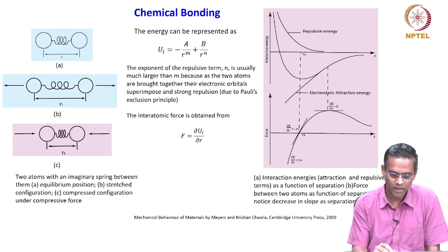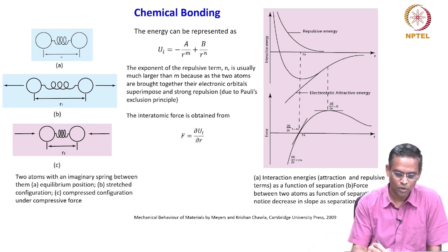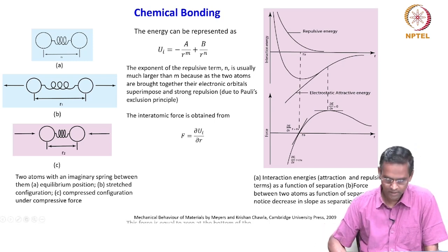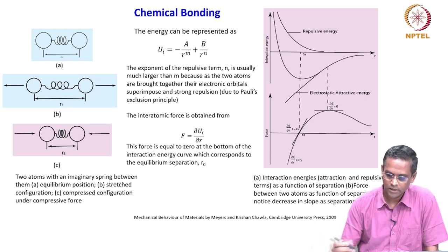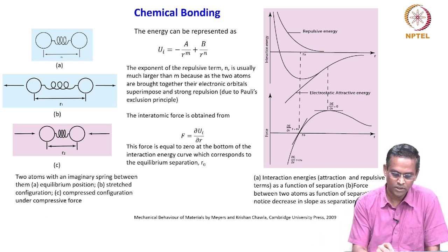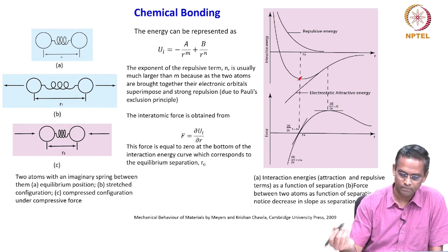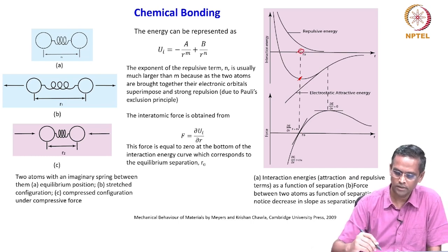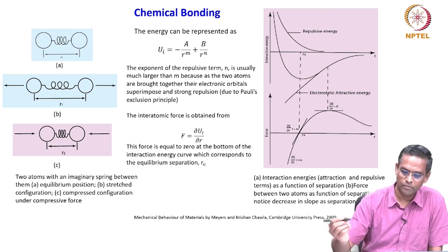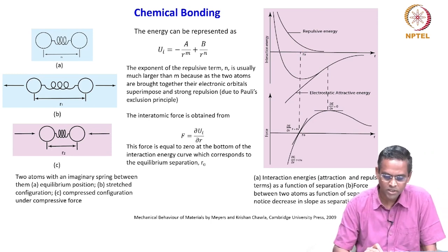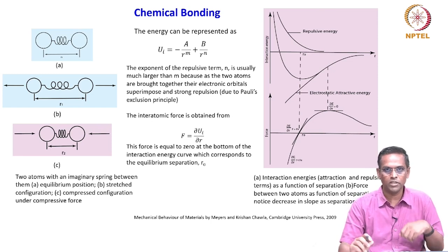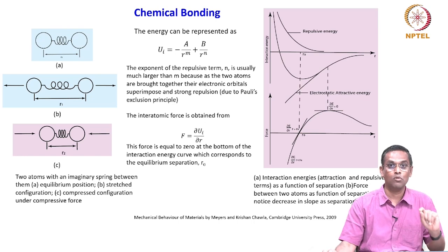The interatomic force is obtained by F = ∂Uᵢ/∂R. As shown in the figure, the force is zero at the bottom of the interaction energy curve, which corresponds to R₀. We are just introducing this curve here — it is called the Condon-Morse curve — and we will spend more time on it.